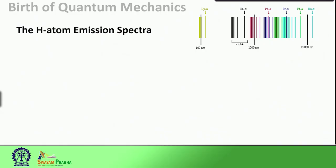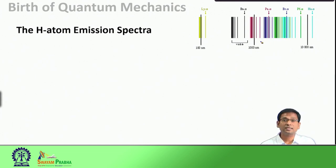We will continue our discussion with yet another experimental result where the existing knowledge in classical mechanics failed to explain the experimental observation and how new ideas were necessary to resolve the issue. The example we are going to discuss today is the hydrogen atom emission spectra. If you look at the hydrogen atom's emission spectra as shown here, you would see that the spectra shows several lines followed by some bands and then empty spaces, and then it gets repeated.